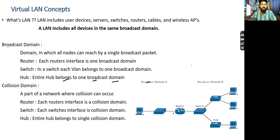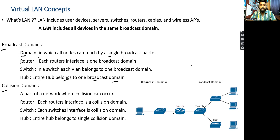Let's talk about broadcast domain and collision domain. Broadcast domain is a domain in which all nodes can be reached by a single broadcast packet. If I'm sending a single broadcast packet in a single broadcast domain, all the devices will receive this particular packet. This depends on what device I'm using - router, switch, or hub.